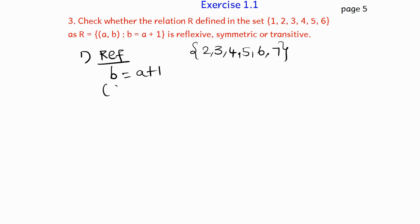For reflexive, a,a should belong to R. If (a,a) belongs to R, then a will be equal to a plus 1. So this condition is false, because a will be equal to a, but a is equal to a plus 1. So 1 will be equal to 1 plus 1. The reflexive condition is false.